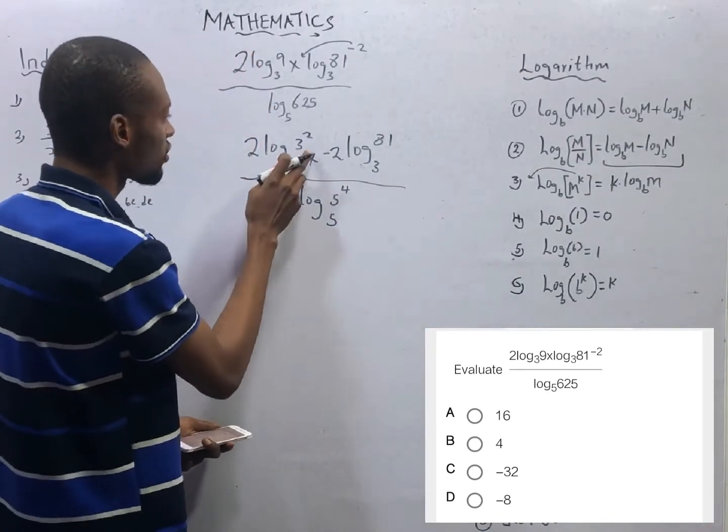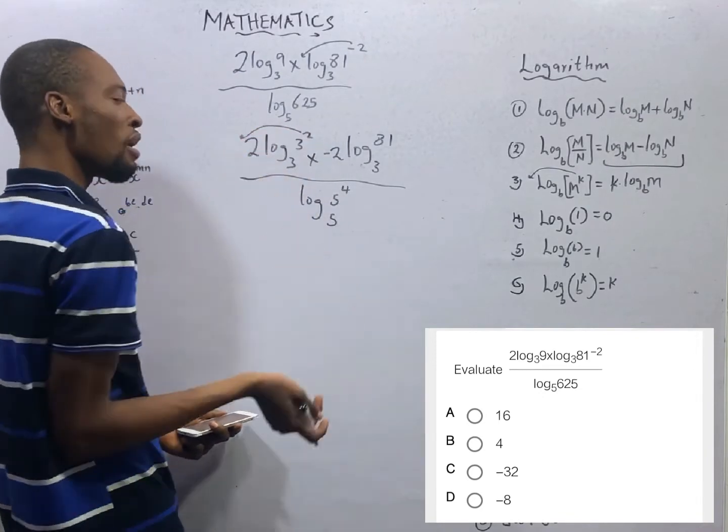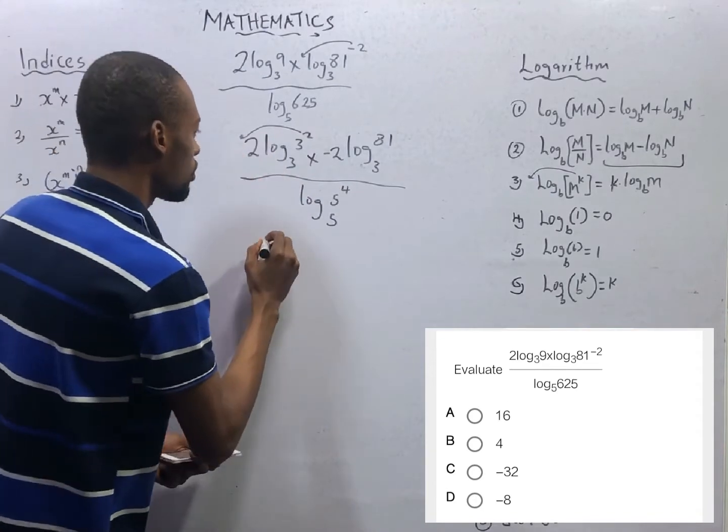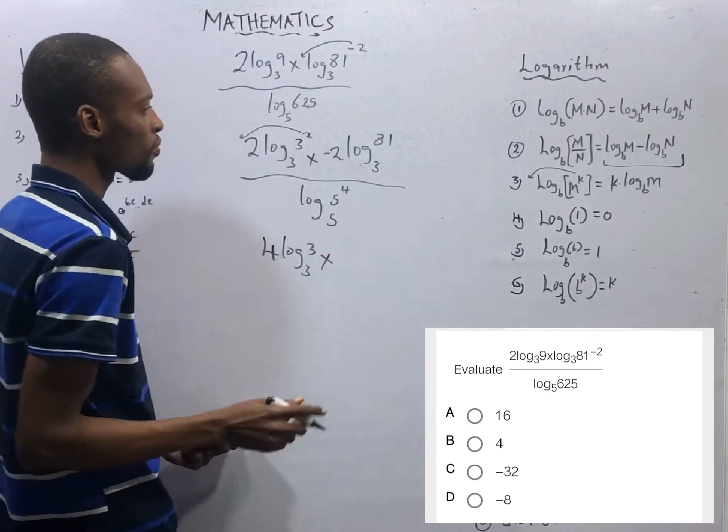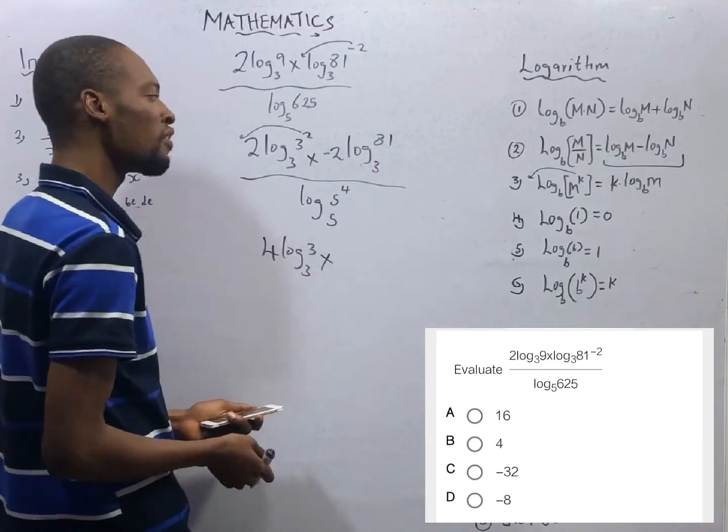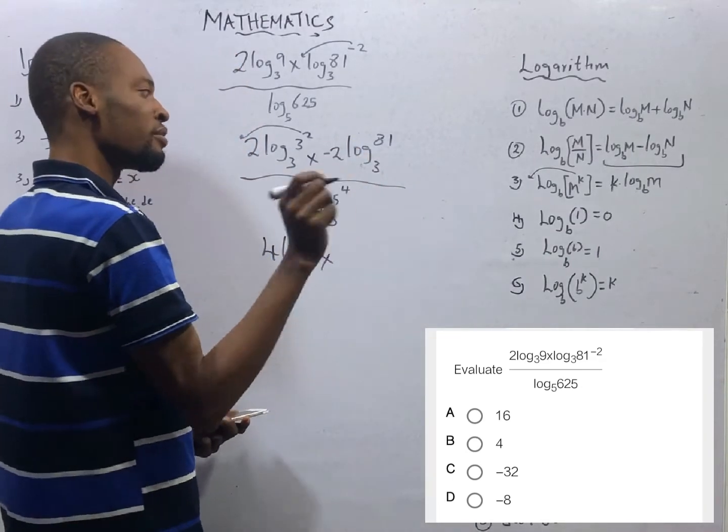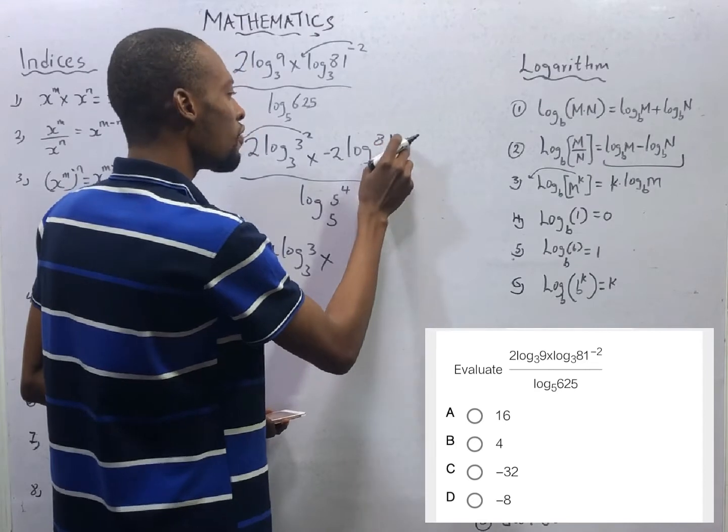So this is, here now, there is power here. We also bring out, bring down the power at the log. So to give us 2 times 2. This becomes 4 log 3 to base 3 times. 81 is 3 raised to power of 4. There is 3 here. Just say 3 times 3 times 3, you will get 81. So here is 3 raised to power of 4.